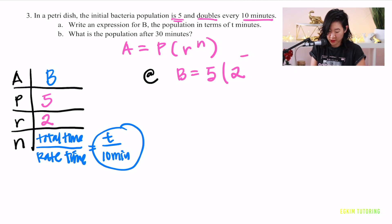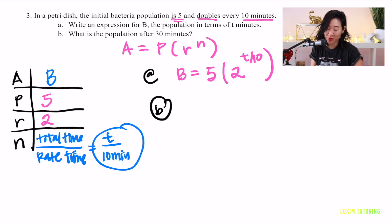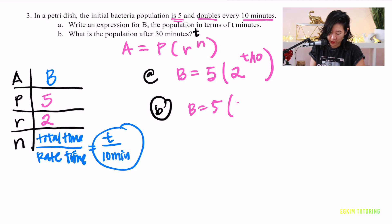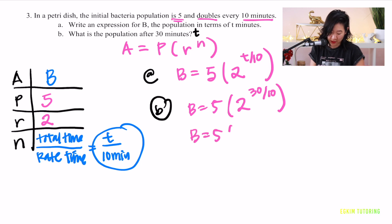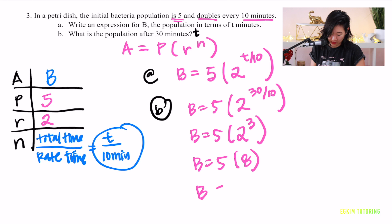For part a: b equals 5 times (2 to the power of t/10). For part b, population after 30 minutes: plug in t equals 30, giving b equals 5 times (2 to the power of 30/10) equals 5 times (2 cubed) equals 5 times 8, so b equals 40.